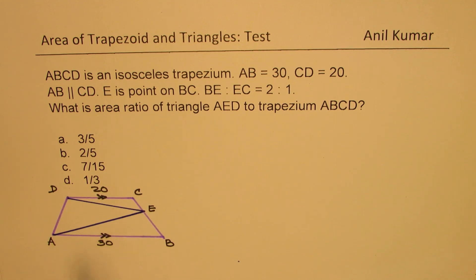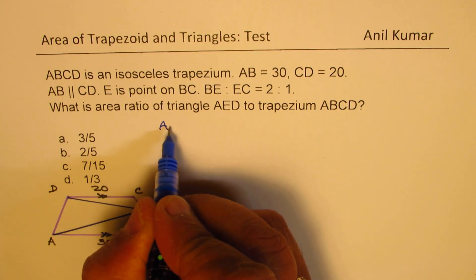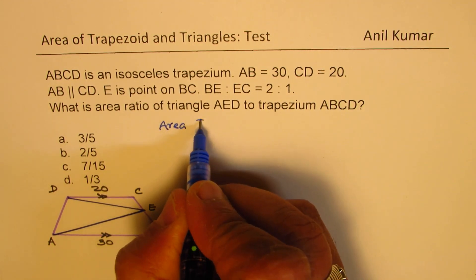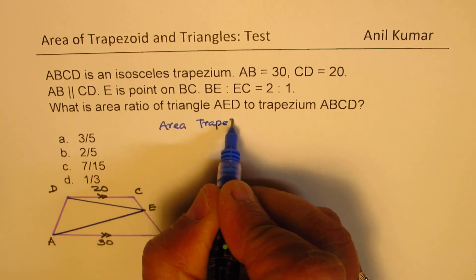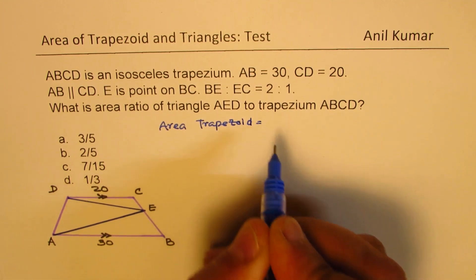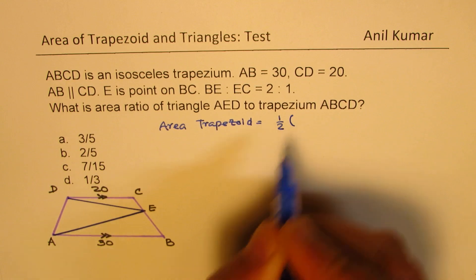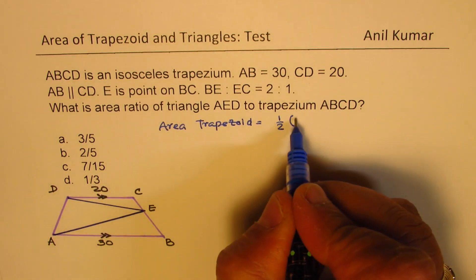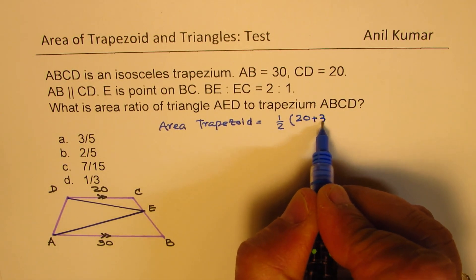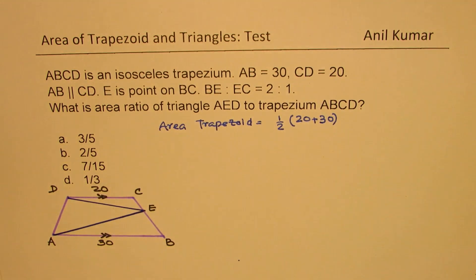Now, we can find area of the trapezoid. We can write this as area of trapezoid is basically half of sum of parallel sides, which is 20 plus 30, times the height. And we really don't know what the height is.